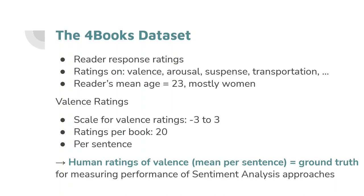The four books dataset consists of a wide range of reader response ratings. Each book was read by 20 readers, most of them female. The average mean age of the 80 participants is 23. On sentence level, the raters were asked to evaluate the emotional impact in terms of valence and arousal. Additionally, they produced ratings on chapter and book level, such as valence, arousal, suspense and transportation. As a ground truth, we calculated the mean of the human valence ratings to evaluate and compare the performance of different sentiment analysis approaches.